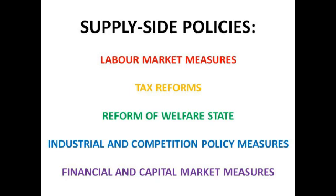Financial and capital market measures: if you deregulate financial markets and promote greater competition among banks, it encourages saving and wider share ownership. When you save with a bank, the bank invests the money; if they invest in a firm, that firm's productivity tends to rise, shifting our long-run aggregate supply curve. If people are buying more shares in companies, those companies have more money to invest in capital equipment, increasing productivity further. What the government is essentially trying to do is promote entrepreneurship and encourage an enterprise culture, so people come up with new capital equipment and innovations, allowing firms and the economy to produce more in the same period of time, causing the long-run aggregate supply curve to shift to the right.